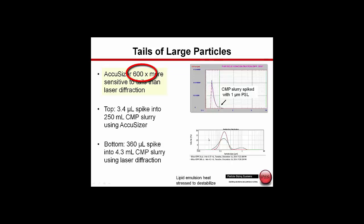So what does the AccuSizer give us? Particle count, particle size, and the best sensitivity to a few large particles, which are sometimes the real problems that cause difficulties either in the quality of the product or in the process that we're monitoring.